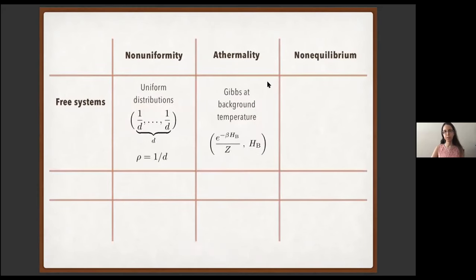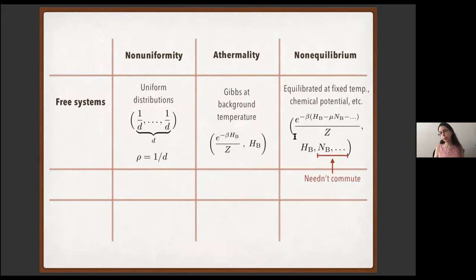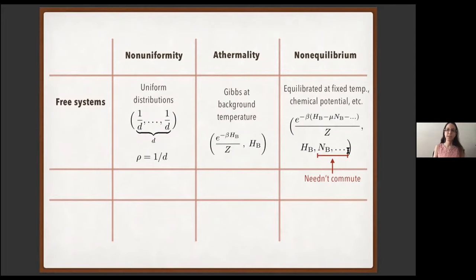In the resource theories for non-equilibrium, the agent can draw from the bath any system at equilibrium relative to the intensive parameters of the bath, such as temperature and chemical potential. The observables representing quantities exchanged with the bath — like particle number and electric charge — almost always are assumed to commute with each other. But a few years ago, this resource theory framework invited some of us to realize we are making this commutation assumption for no good reason, opening the door to truly quantum thermodynamics with non-commuting observables.